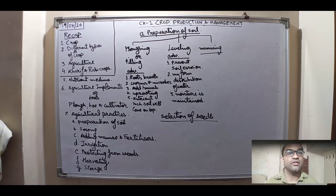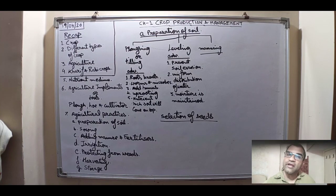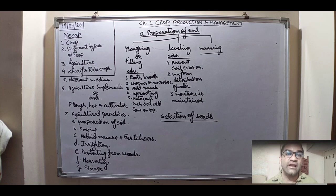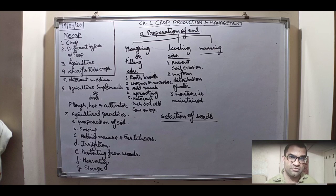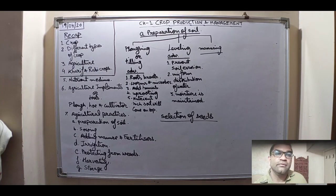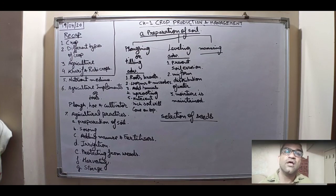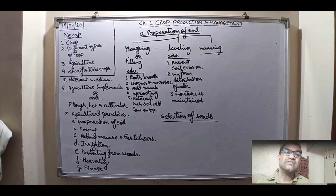The second advantage of plowing is that loose soil allows worms and microbes to grow more easily. Worms and microbes are called the good friends of the farmer because they decompose all dead plants and animals, which increases the fertility of the soil.